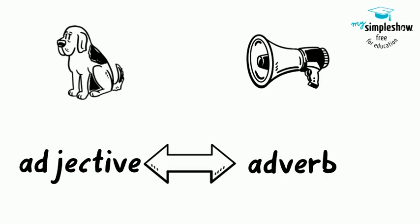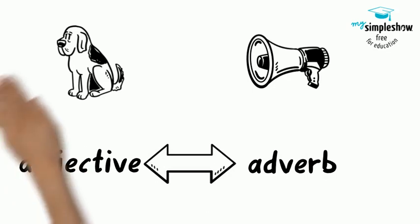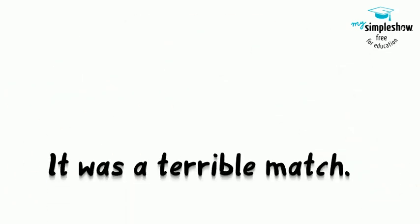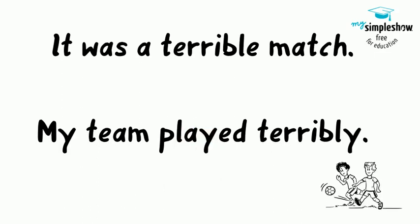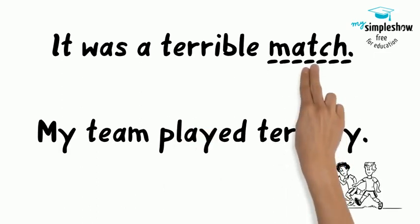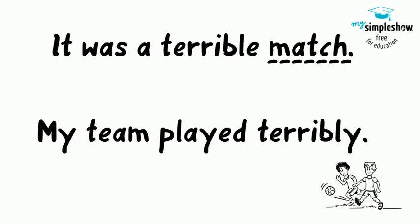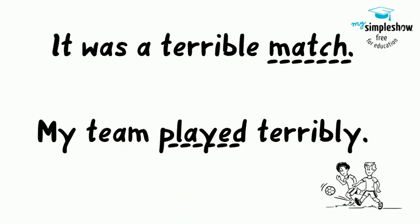Let's compare that again. On Saturday, I had a terrible match. My team played terribly. In the first sentence, I describe a thing — the match was terrible — so I use an adjective. In the second sentence, I describe how something was done. I describe how the team played, so I use an adverb.